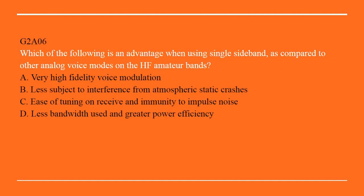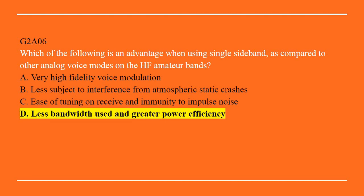G2A06: Which of the following is an advantage when using single sideband as compared to other analog voice modes on the HF amateur bands? A. Very high fidelity voice modulation. B. Less subject to interference from atmospheric static crashes. C. Ease of tuning on receive and immunity to impulse noise. Or D. Less bandwidth used and greater power efficiency. Correct answer here is D: Less bandwidth used and greatest power efficiency.